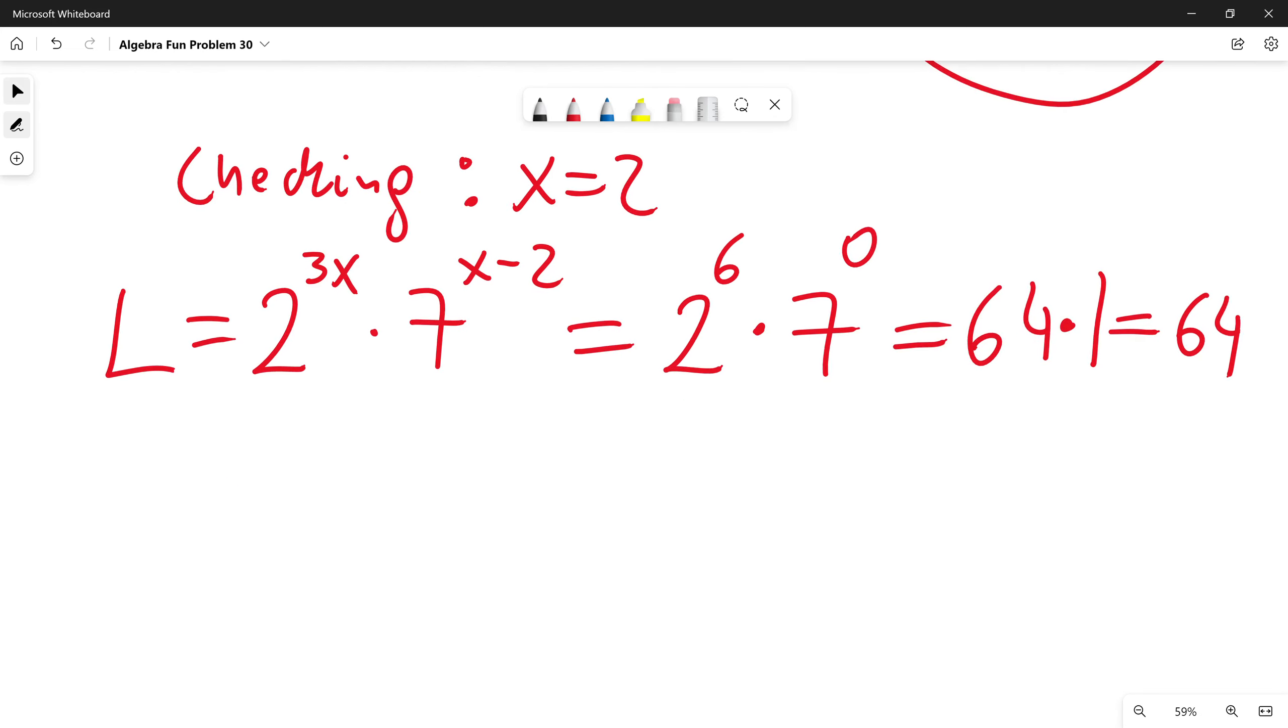The right side of the equation was 4 to the power of x plus 1. When x is 2, this is 4 to the power of 3. 4 times 4 times 4 is also 64. So the left side equals the right side when x is 2, so x equals 2 is the correct answer.